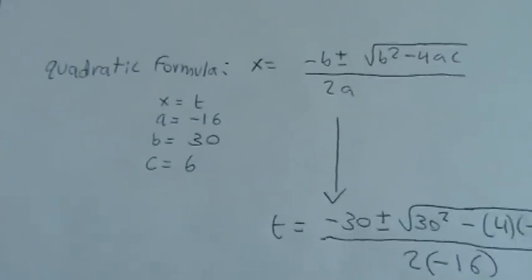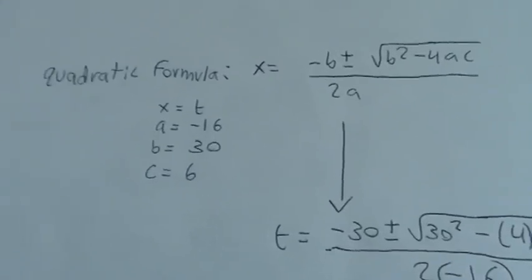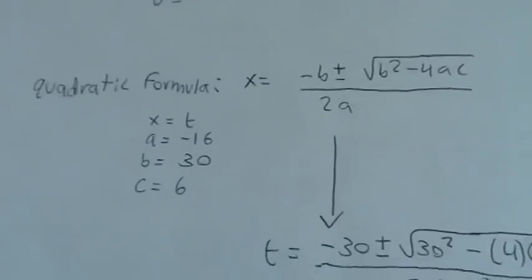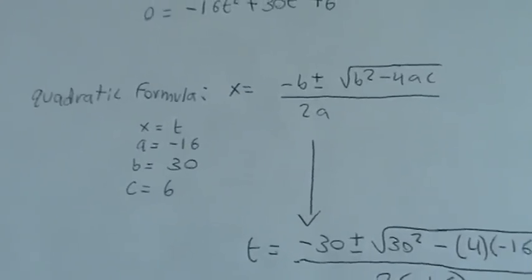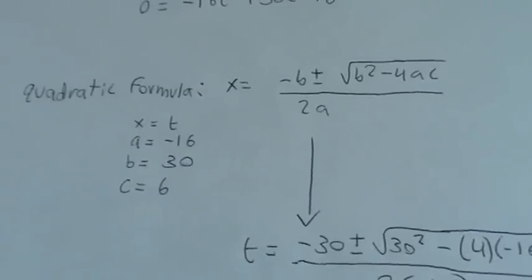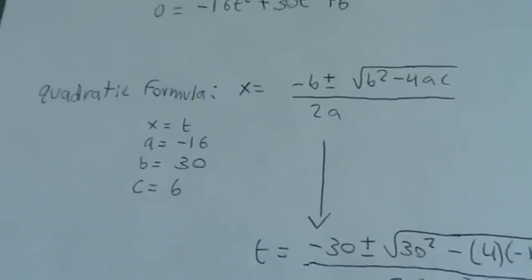The next thing that you do is use the quadratic formula to find the values of t. The quadratic formula is x = (-b ± √(b² - 4ac)) / 2a. We're using t as the x value, with a = -16, b = 30, and c = 6.